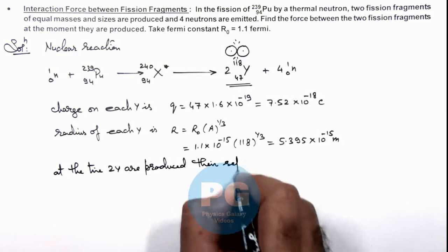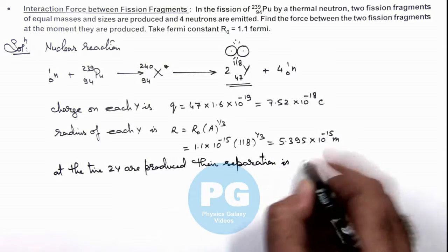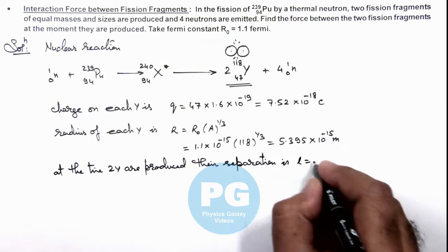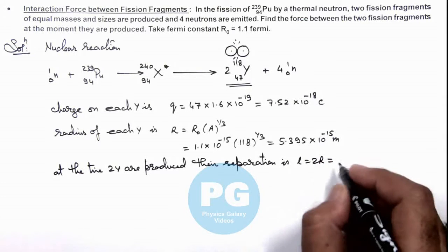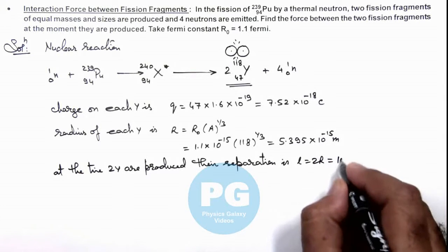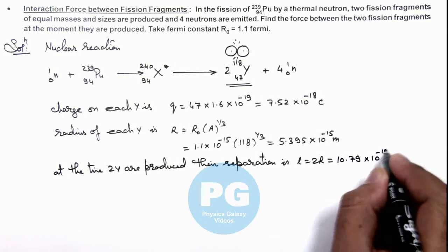Their separation, this L, can be written as 2R, which is equal to R we are already having. If we twice it, this will be 10.79 multiplied by 10 to power minus 15 meter.